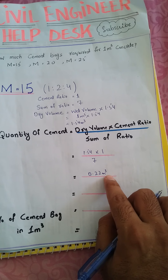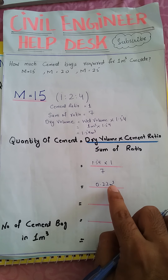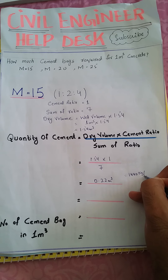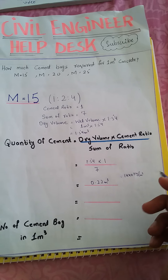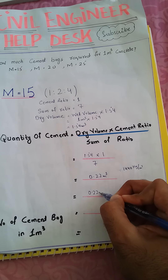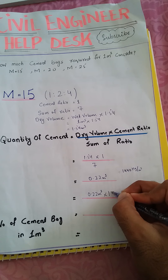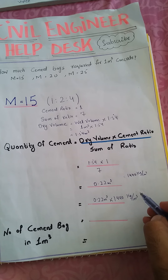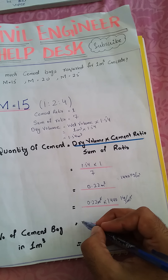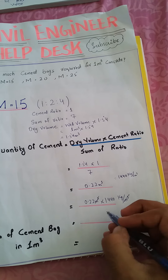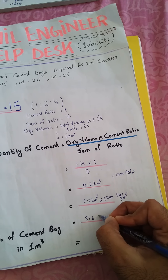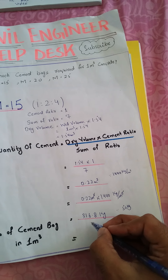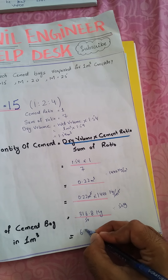We have the cement quantity in cubic meters, but we want the number of cement bags. So we multiply by the density of cement, which is 1440 kg per cubic meter. That gives us 0.22 multiplied by 1440, which equals 316.8 kg. Since one cement bag equals 50 kg, dividing by 50 we get 6.3 bags.